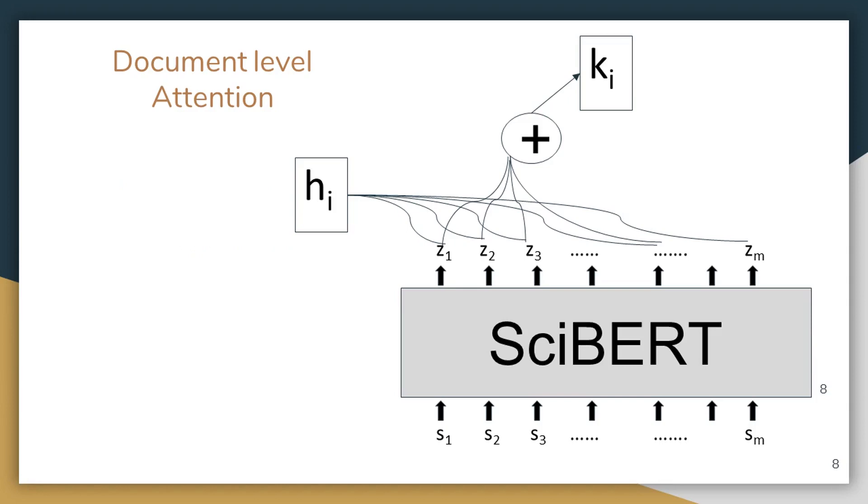So in the previous slide, if you remember, we have obtained hidden state representations h1 to hn. Now we will see how we will enrich the representation of a word representation h_i. So in that same document, we have a couple of sentences called s1 to sm. We pass them through a sentence encoder.